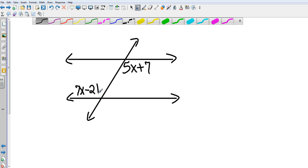First we got to identify the type of angles they are. They're both inside, they're on opposite sides of the transversal, so that makes them alternate interior. So I'm just going to identify them as alternate interior.